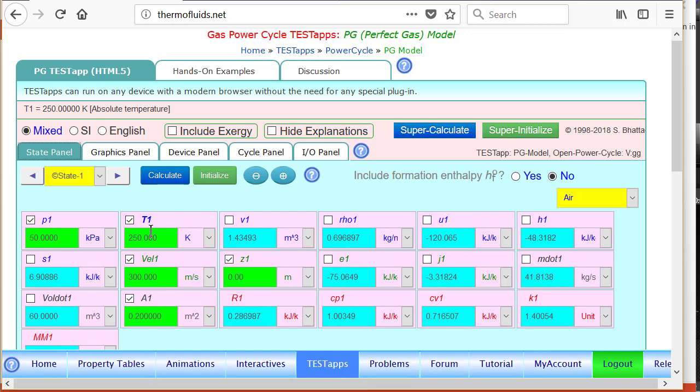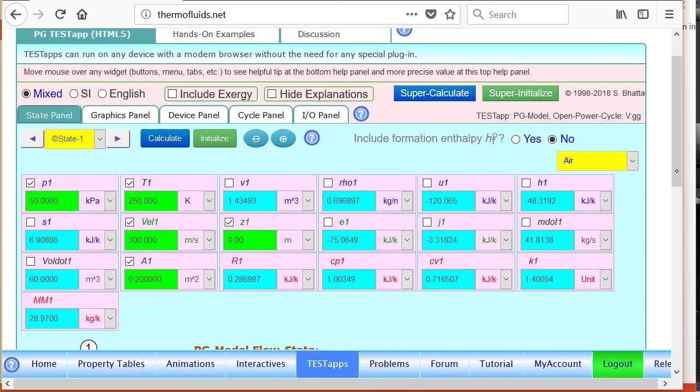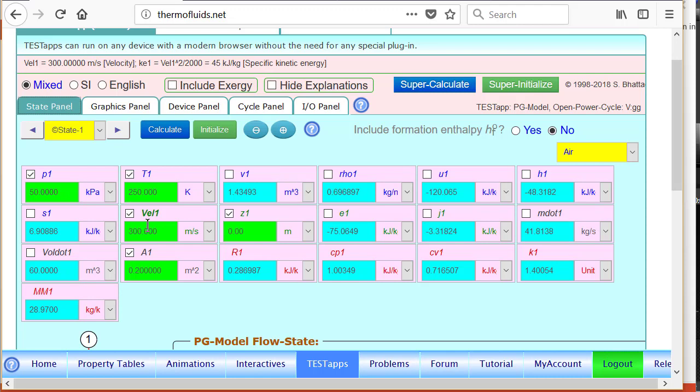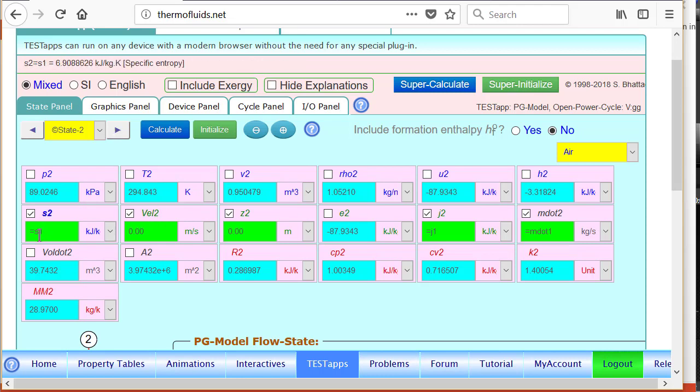So state one as we already stated, p1 is known, t1 is known, and the area of the inlet, the velocity at one is known, and I think the diffuser area is known. So that gives us the mass flow rate and all other variables. State two is the isentropic state at the exit of the diffuser.